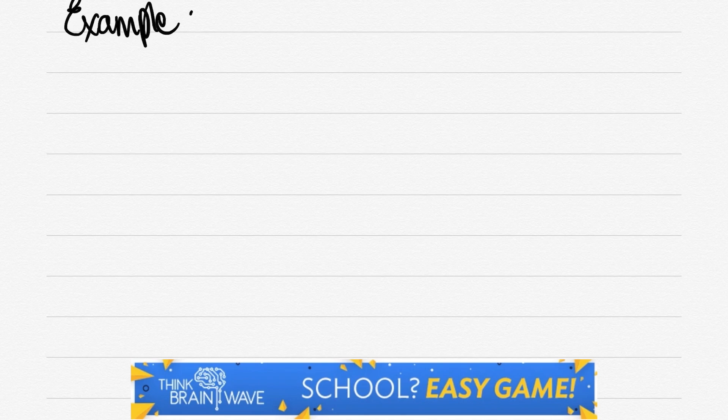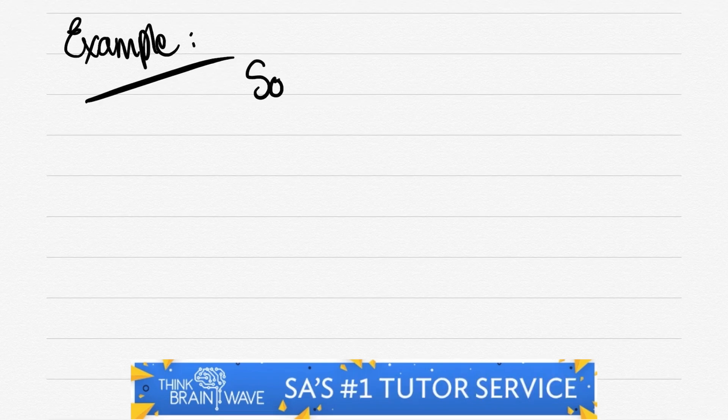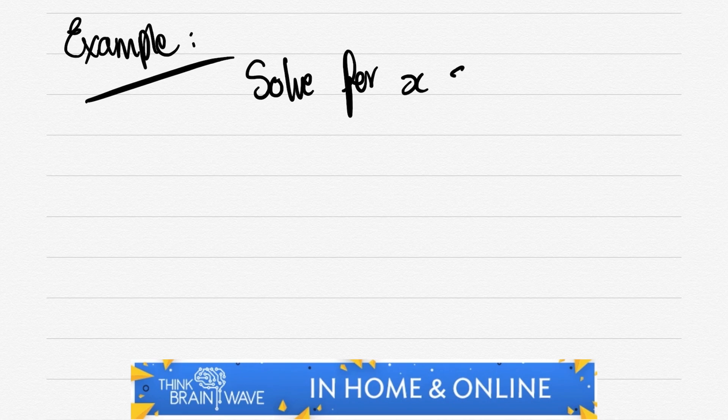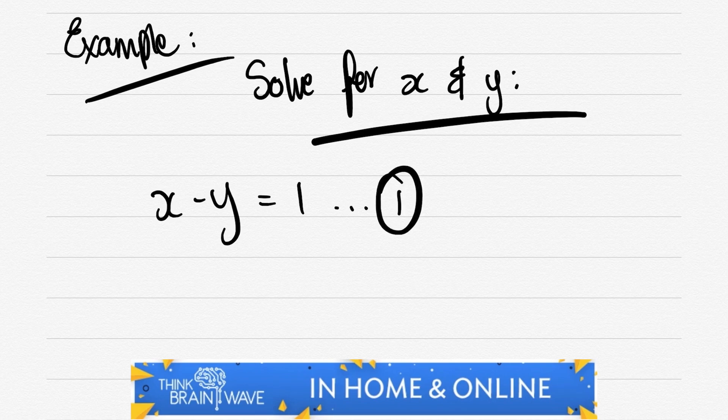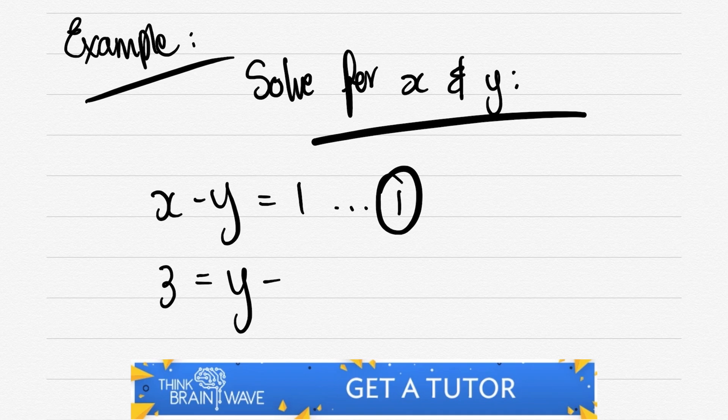Right, let's just do an example. Let's solve for x and y. x - y = 1. That's our first equation. And 3 = y - 2x, that's our second equation.